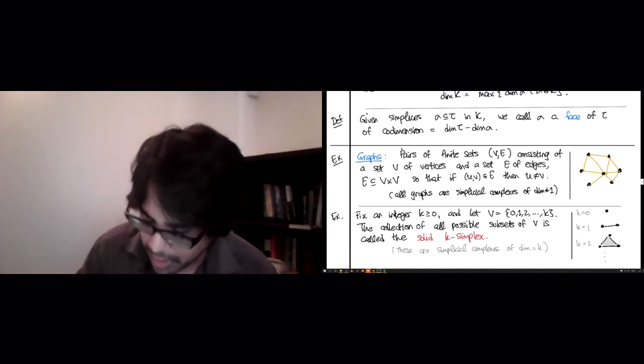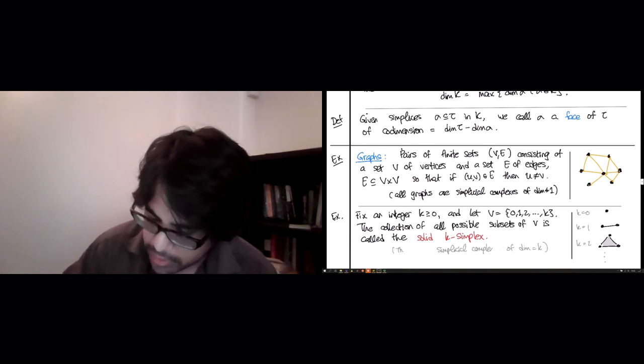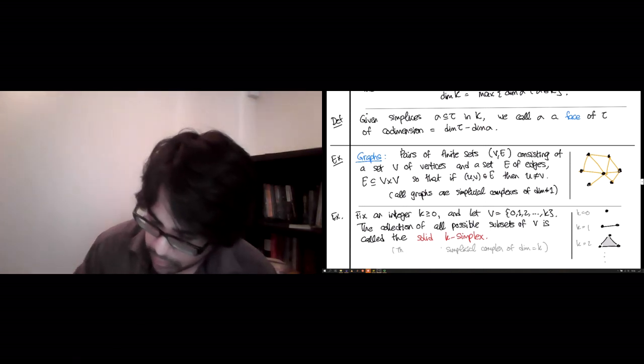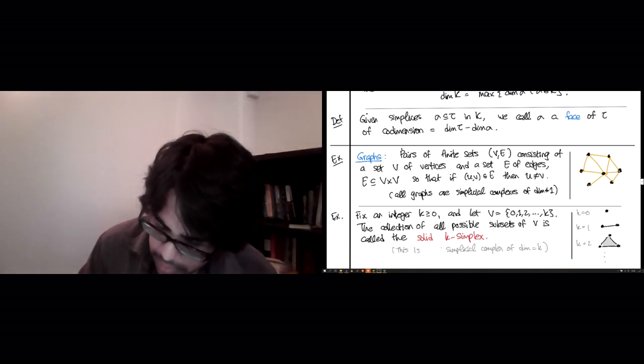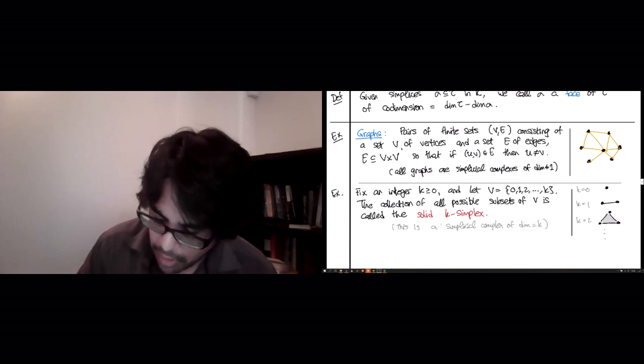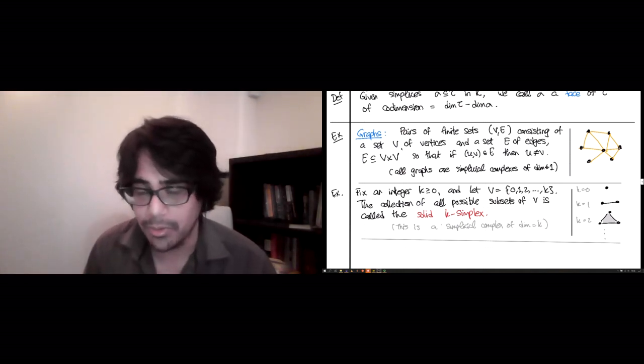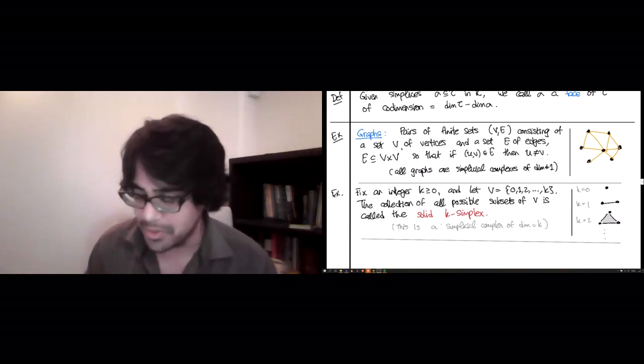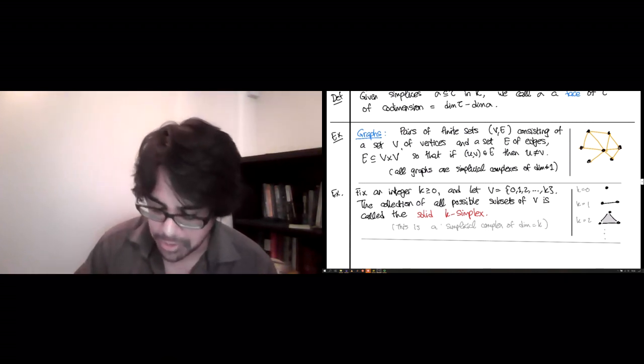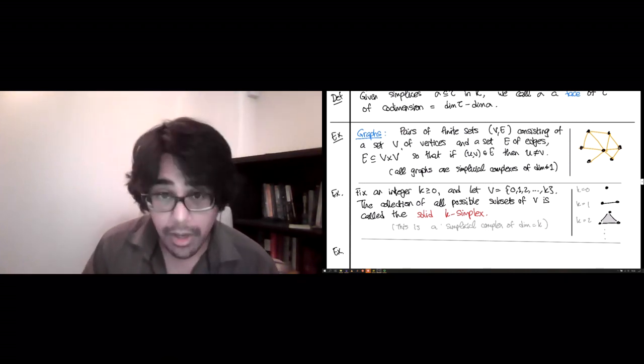So for each k, this is a simplicial complex of dimension k. Maybe I should specify that this is supposed to be one per k. And the last example of simplicial complexes, by the way, I should specify, I did not stop drawing at k equals two because this construction stops at k equals two. I stopped drawing because the next thing I have to draw would be a solid tetrahedron, and those are sort of painful to illustrate on two-dimensional screens.